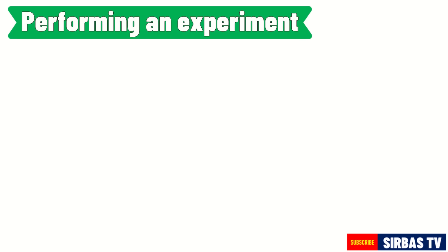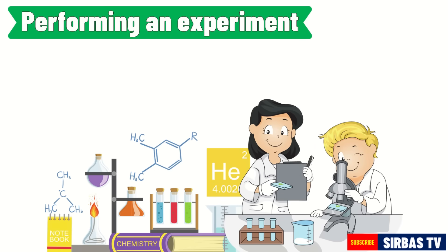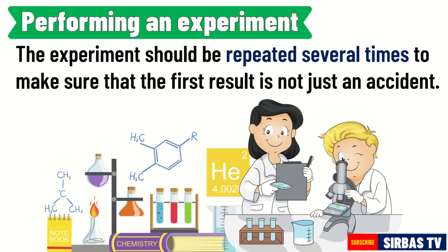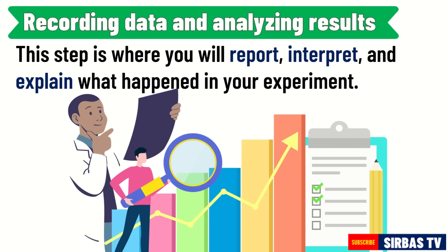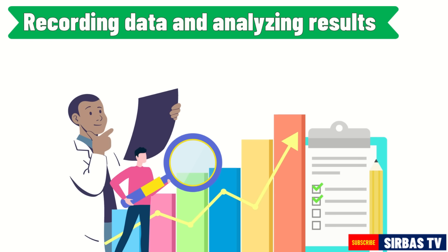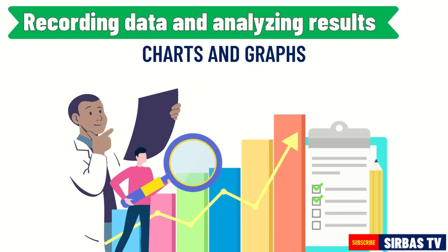Aside from variables, your experiment should also contain the materials and the procedure that you are going to use. The experiment should also be repeated several times to make sure that the first result is not just an accident. The next part is recording the data and analyzing the results. This step is where you will report, interpret, and explain what happened in your experiment. You can use charts and graphs in presenting your data and results to make it easier to visualize for your audience.